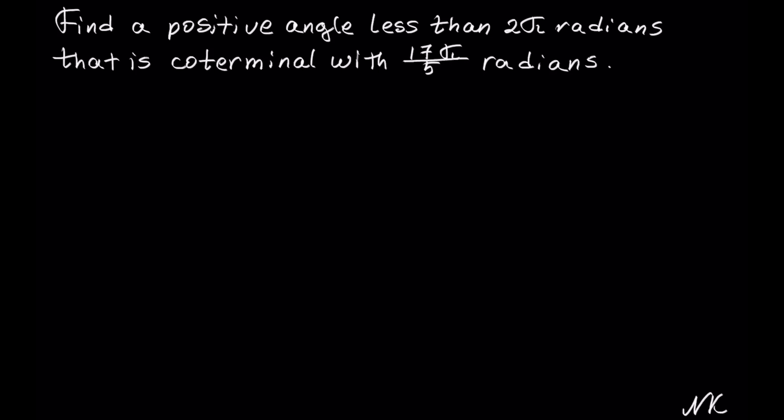If you are not sure whether or not the fraction is more or less than 2π, you can take 17 divided by 5 and plug it into the calculator. You should be able to get 3.4. 3.4 is more than 2 which means we need to reduce this fraction.